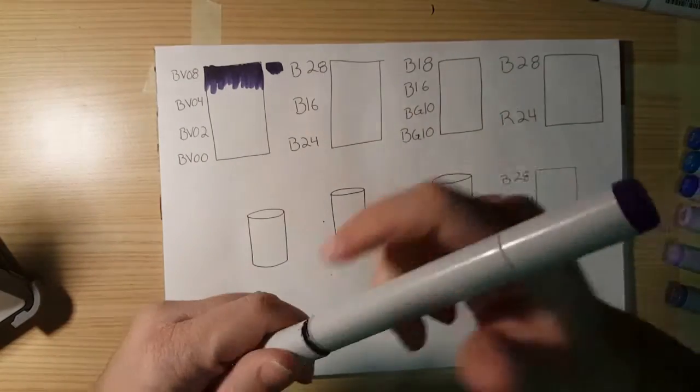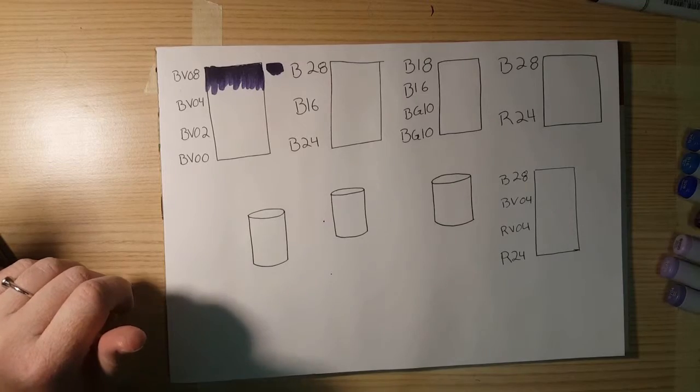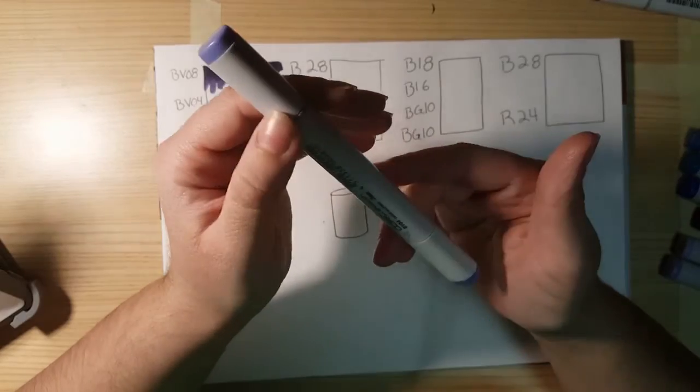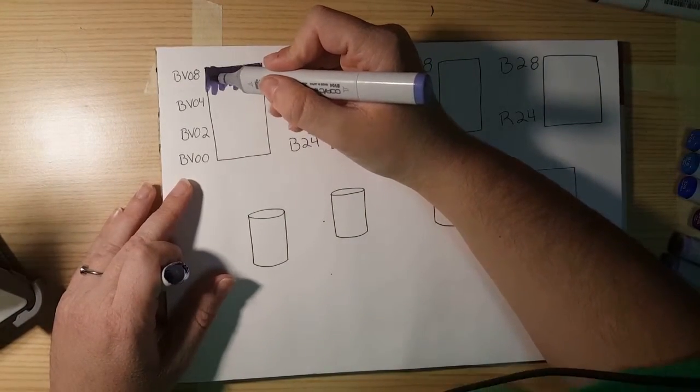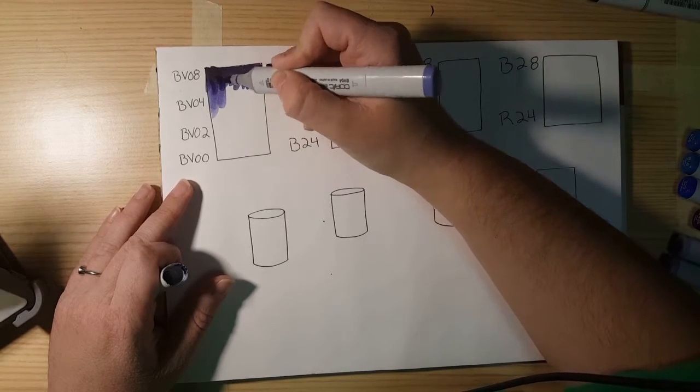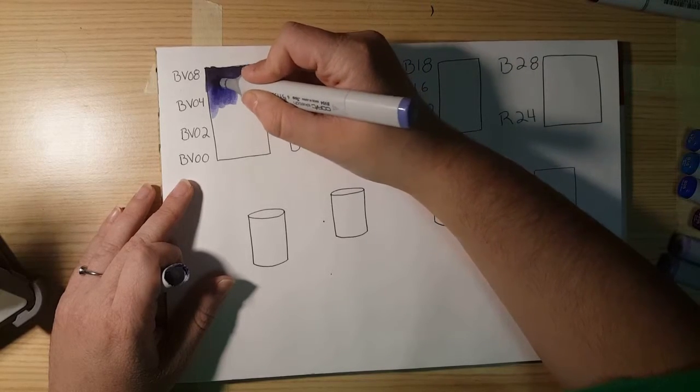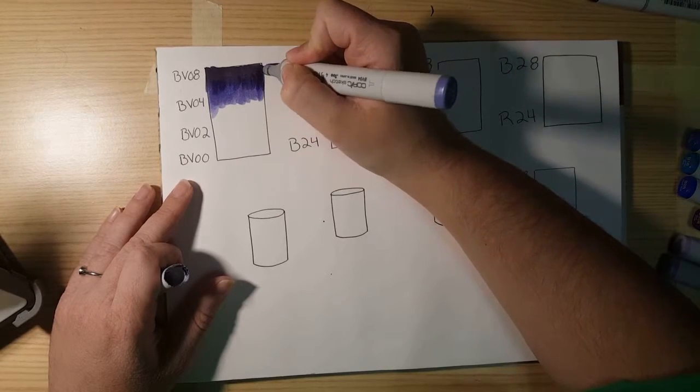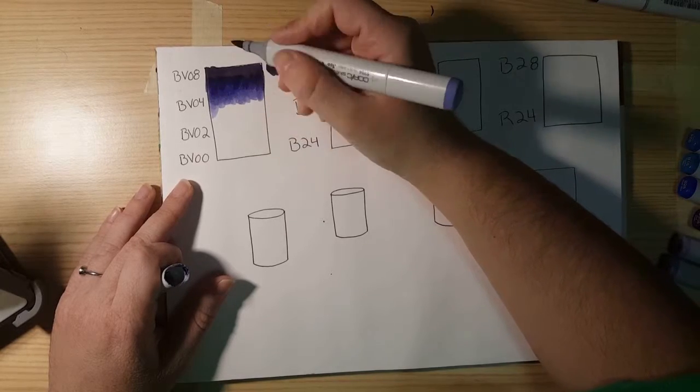Then after I lay down my darkest color, I go back with my next darkest, which would be BV04. And I go into the darker area, and then flick out. And I just kind of keep doing that until it blends to the point where I think it looks good.